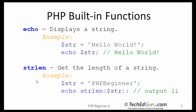So, PHP built-in functions — some of them you may have already seen in my earlier tutorials. The echo function displays a string. For example, if the variable str contained a string and if you wanted to print its contents, you say echo and the name of that variable. This will be the resulting output.